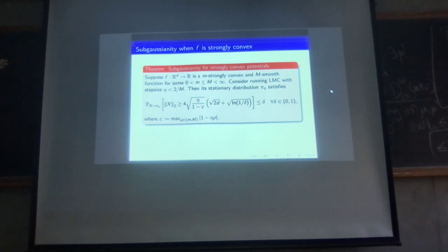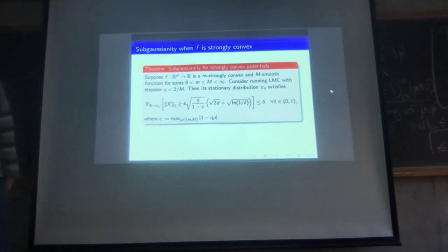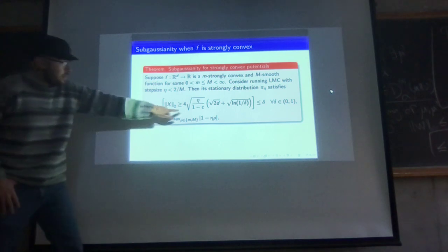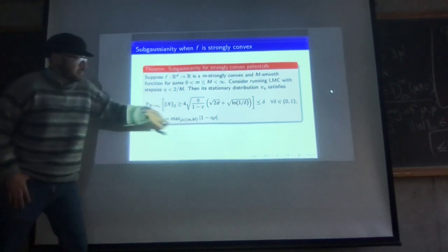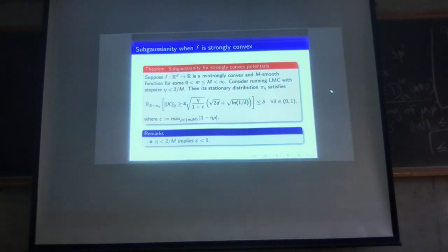Let's state the theorems. First, the sub-Gaussian concentration for strongly convex potentials: suppose we have an M-strongly convex and M-smooth potential, and we run the Langevin Monte Carlo algorithm with step size strictly less than 2 over M. Then the stationary distribution satisfies a concentration inequality, where a constant C appears — some kind of contraction factor. The way we choose the step size implies C is always strictly less than 1.